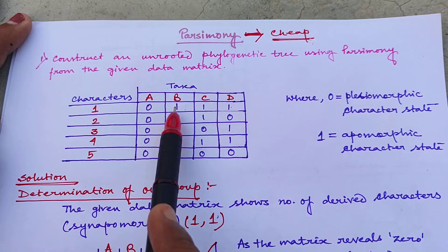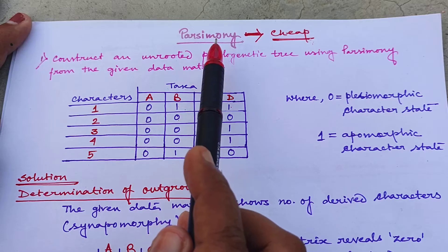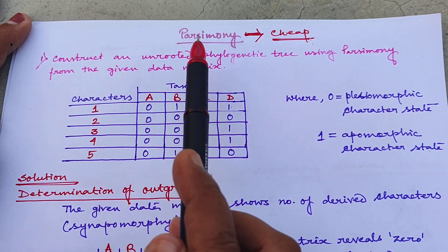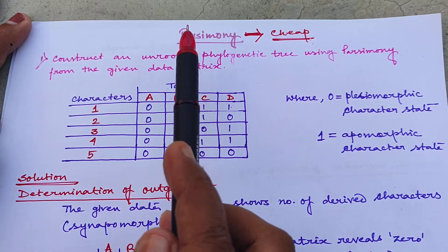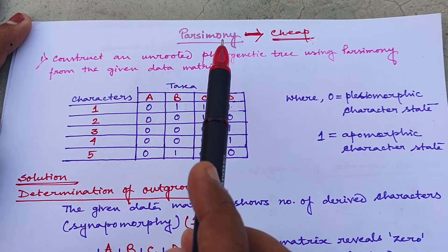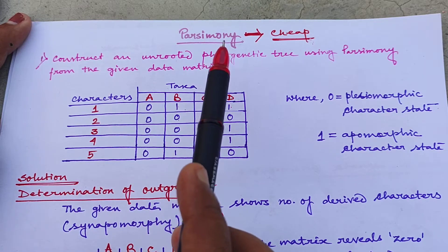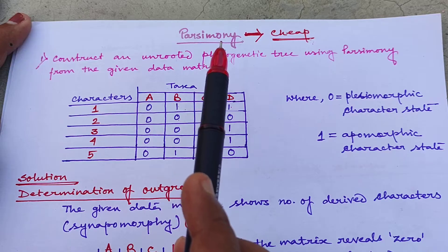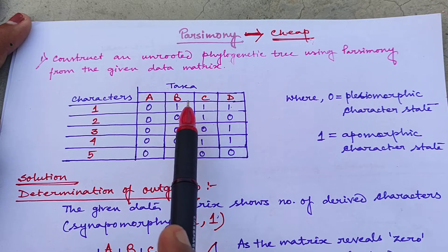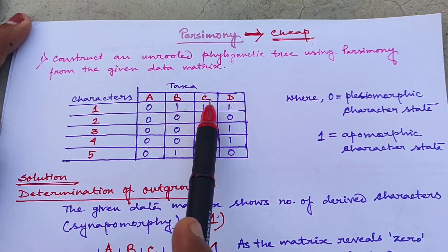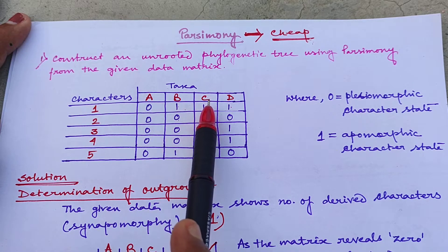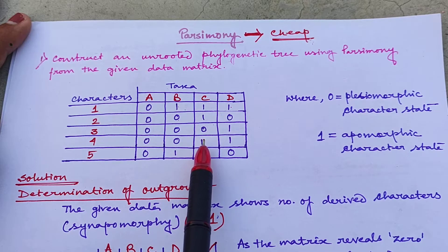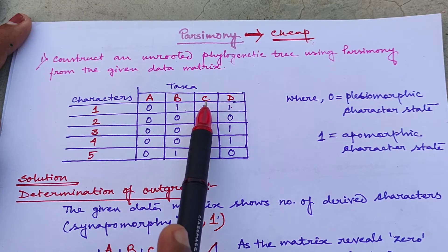0 is the ancestral character state and 1 is the derived character state. In my previous video I have already told you parsimony is a cladistic method where we try to construct a maximum parsimonious tree based on shared derived character states or synapomorphic character state. The synapomorphic character state is where 2 taxa share their derived character state. Here taxa B and C share 1 and 1, so character 1 is synapomorphic for taxa B and C. Similarly, taxa C and D are also sharing 1 for character 4, so for character 4, C and D are synapomorphic.